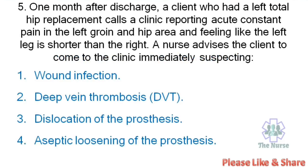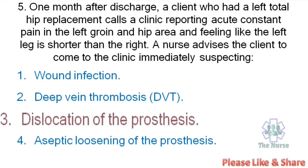Next question: One month after discharge, a client who had a left total hip replacement calls the clinic reporting acute constant pain in the left groin and hip area and feeling like the left leg is shorter than the right. A nurse advises the client to come to the clinic immediately, suspecting: wound infection, deep vein thrombosis, dislocation of prosthesis, or aseptic loosening of the prosthesis. Correct answer: Dislocation of the prosthesis.